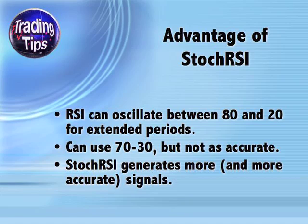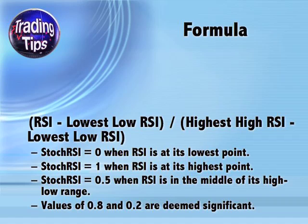Stochastic RSI corrects this by increasing sensitivity and generating more accurate buy and sell signals. It measures the value of RSI relative to its high-low range over a set number of periods. For example, a 14-day Stochastic RSI would use the current value of 14-day RSI and the 14-day high-low range for 14-day RSI. The formula is: Stochastic RSI = (RSI − Lowest Low RSI) ÷ (Highest High RSI − Lowest Low RSI). Make sure you use the proper order of operations.